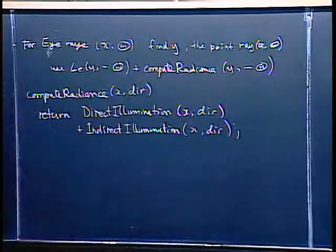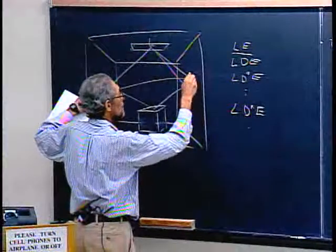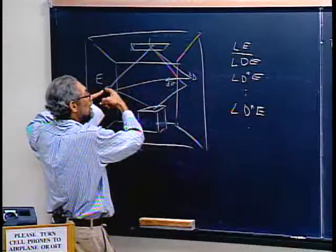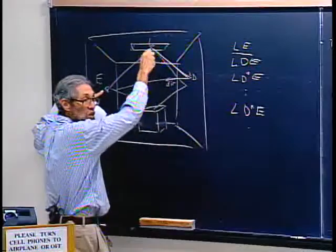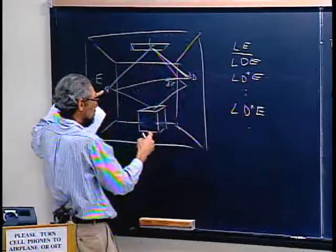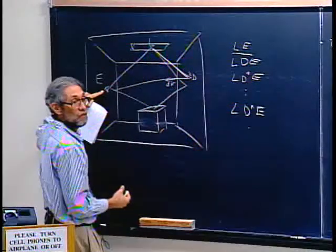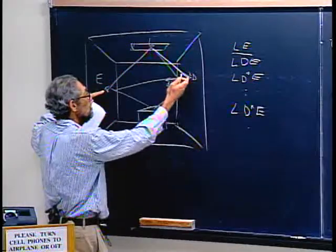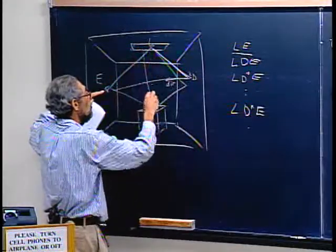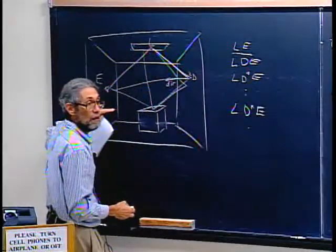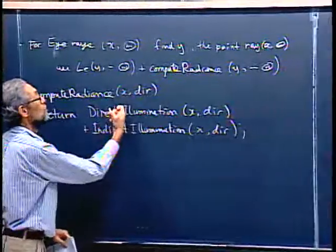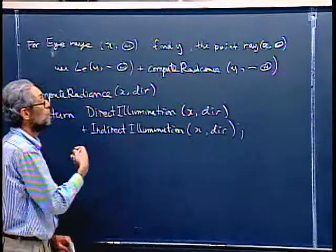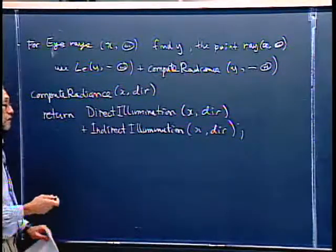The idea is: if this is point x with a direction it's supposed to be returning light to, direct_illumination samples the light sources to get the direct illumination not occluded by other objects — for example, the box might be hiding the light from a point on the floor. Indirect_illumination is illumination that reaches this point by bouncing from the light off another surface. Direct illumination traces a ray to a point on the light source using its area; indirect illumination makes recursive calls to compute_radiance.